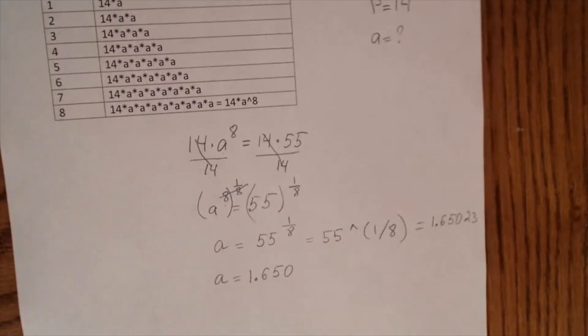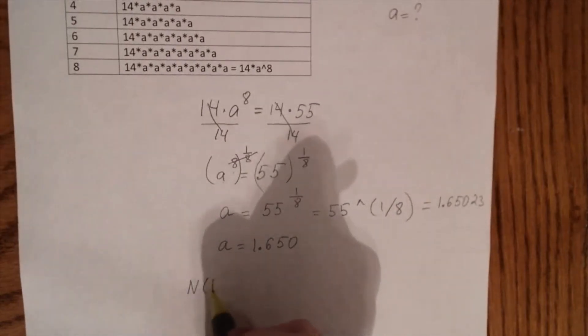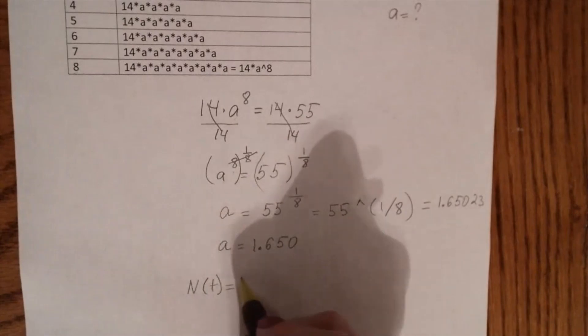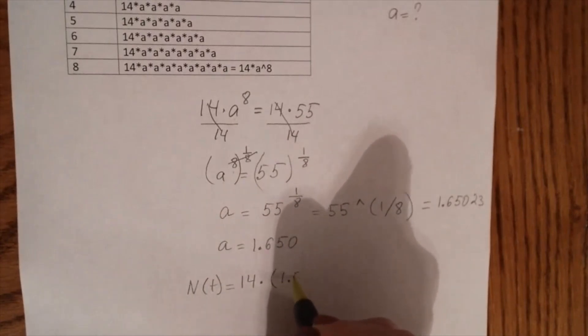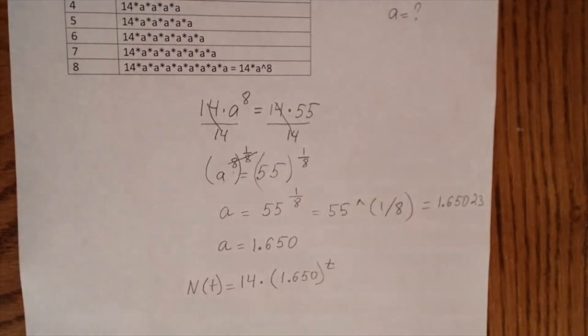We have the initial value. We have the factor. Now we can write the formula down. N(t) is equal to 14 times 1.650 to the t power.